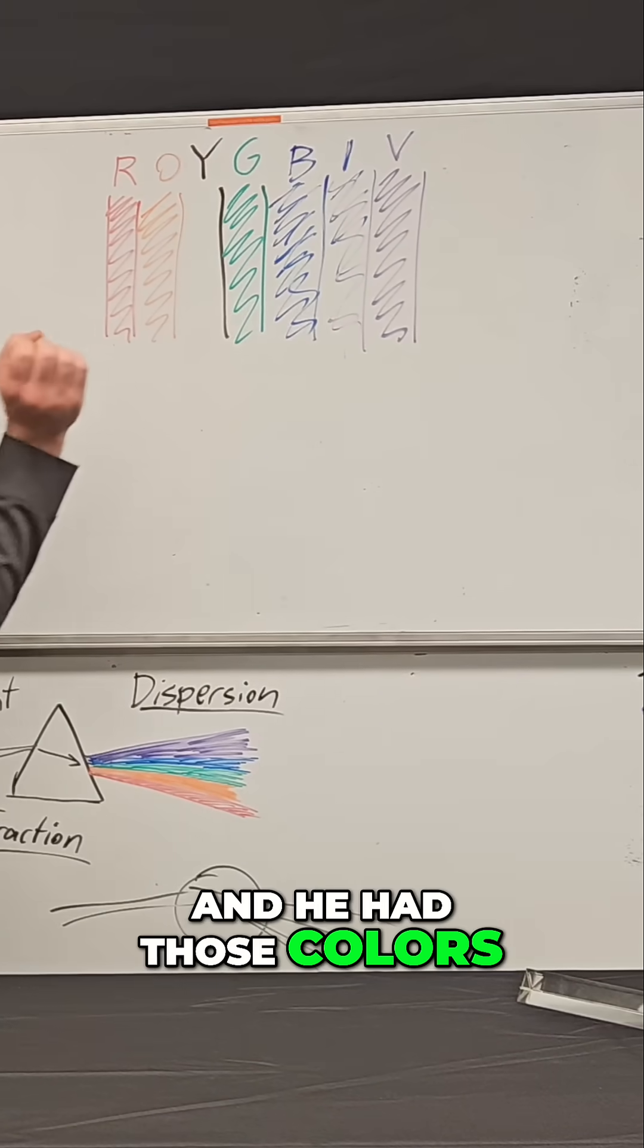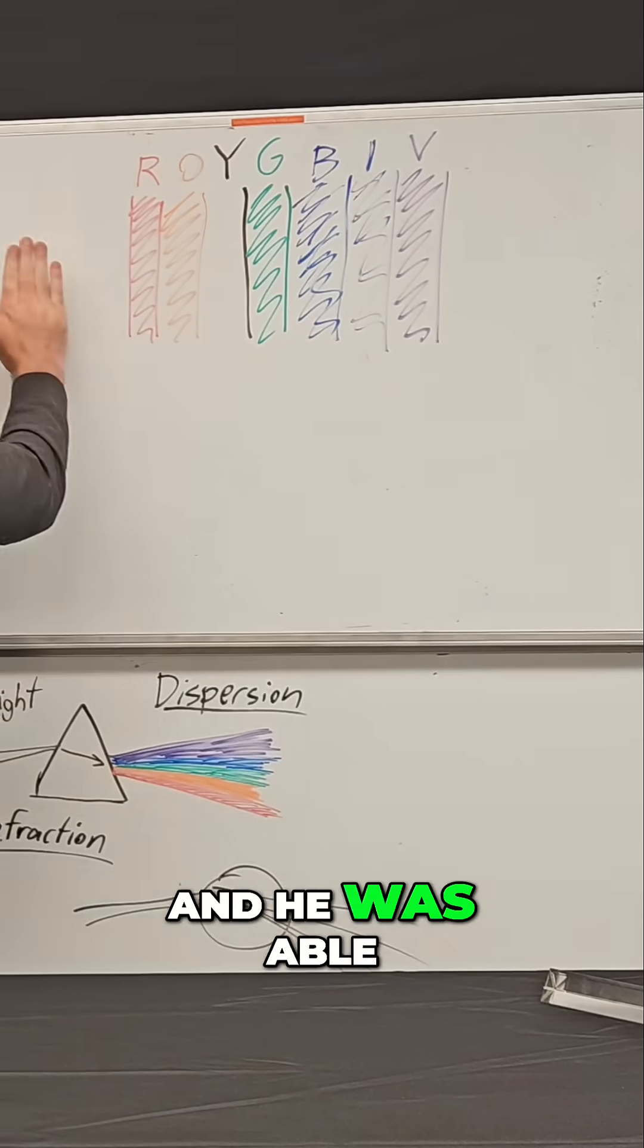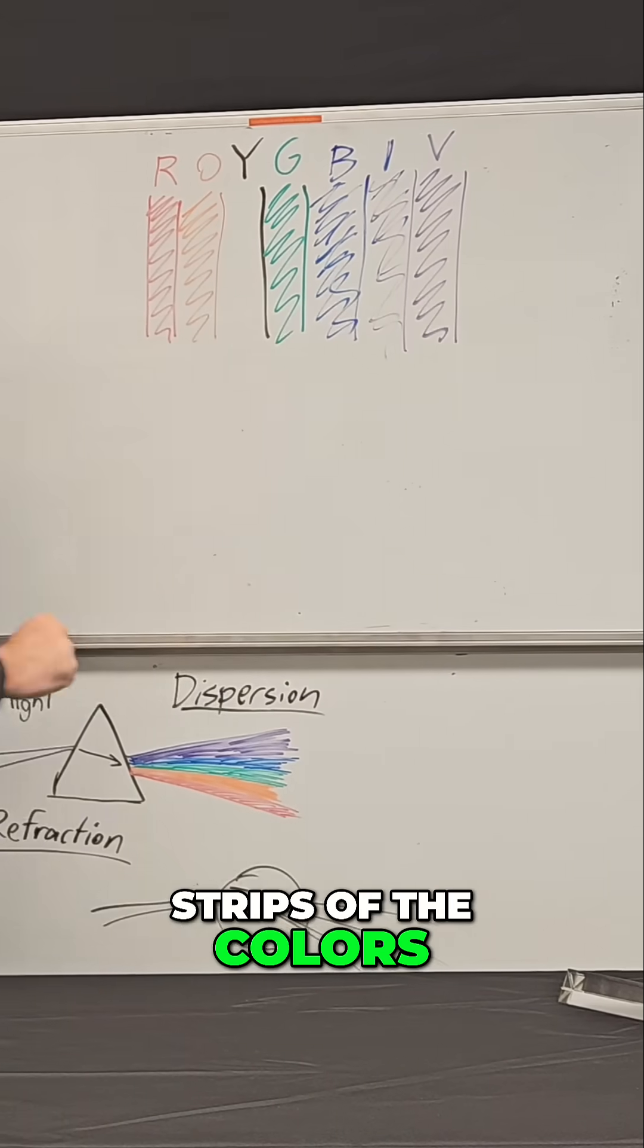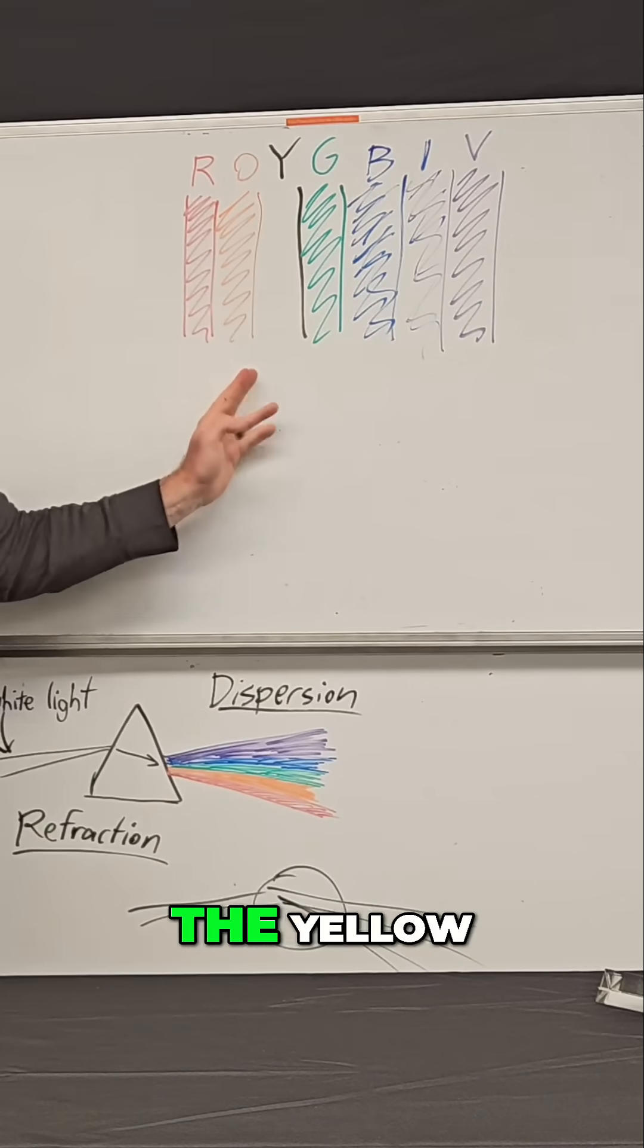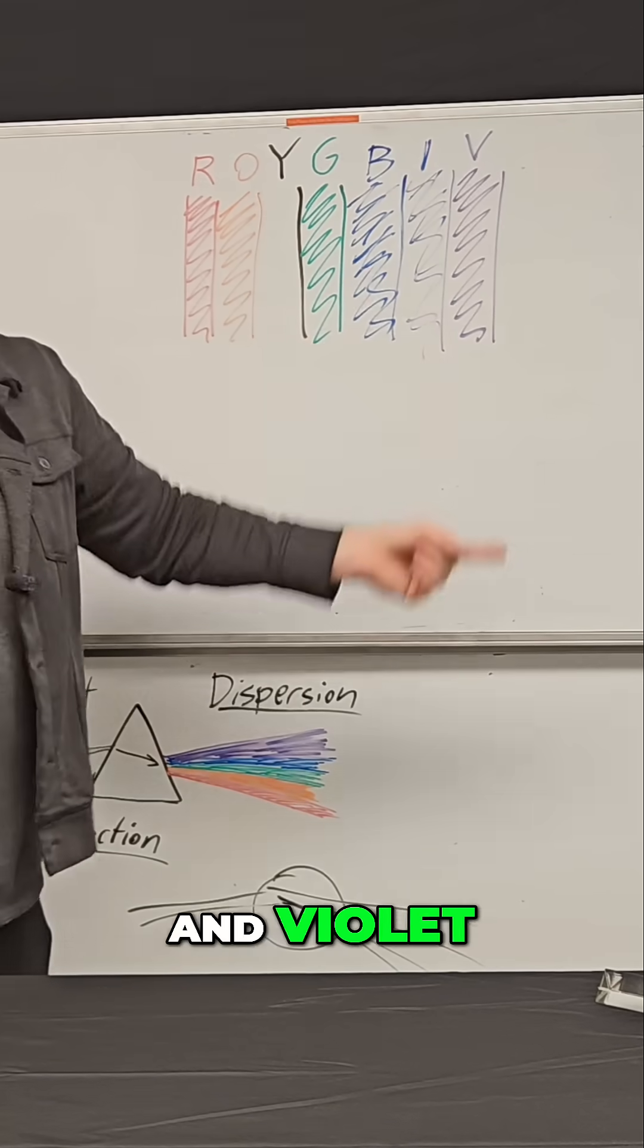And he had those colors hit a boundary like this, and he was able to get nice even strips of the colors, much better than I was able to do. And so he could see the red, orange, yellow, green, blue, indigo, and violet.